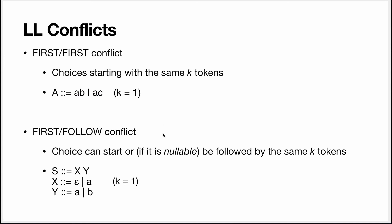The other kind of conflict is a first-follow conflict. This happens when there are two choice alternatives, one of which can start with a token, and the other is empty, but the non-terminal can be followed by the same token. For example: you have X followed by Y, where X is optional A (either empty or A), and Y is A or B. If you are parsing X and you see token A, should A match X, or should X match empty and A go to Y? The algorithm cannot decide — this is a first-follow conflict.